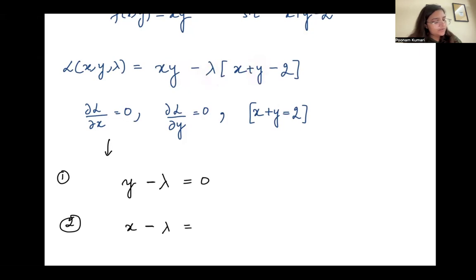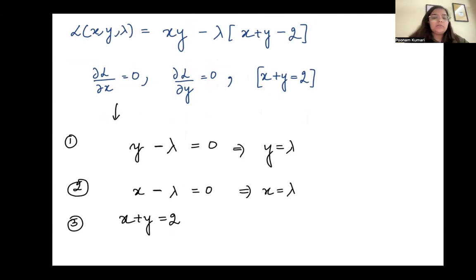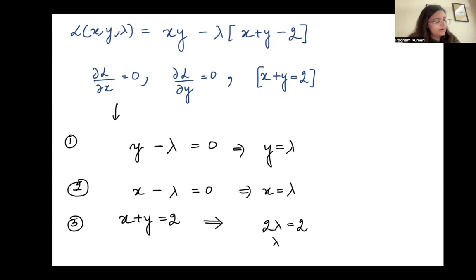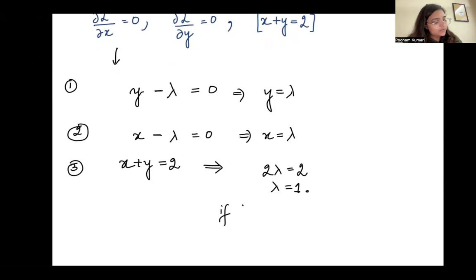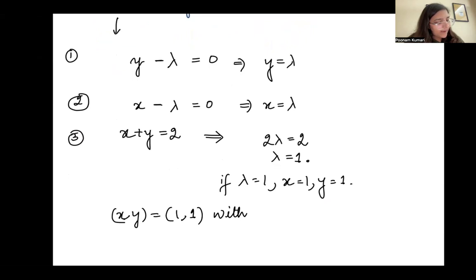And the third equation is x plus y equals 2. So we have y equals lambda, x equals lambda, and x plus y equals 2. Substituting, we get 2 lambda equals 2, so lambda equals 1. If lambda equals 1, then x equals 1 and y equals 1. So the solution to all the necessary conditions is (x, y) = (1, 1) with lambda equals 1.